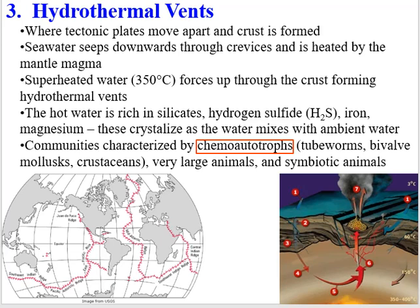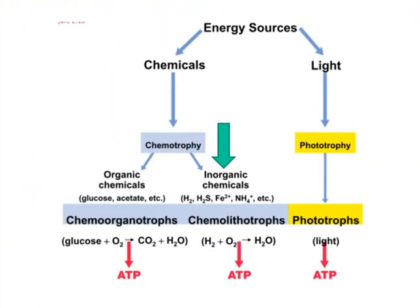These are chemoautotrophs. There are different tube worms, some bivalve mollusks, and bacteria incorporated into tissues, creating some really interesting ecological relationships. It all starts with the ability of these organisms to obtain energy from the chemicals in the water, which is unusual. There are bacteria that do this in shallow water in anoxic environments — bacteria that are chemoautotrophs.